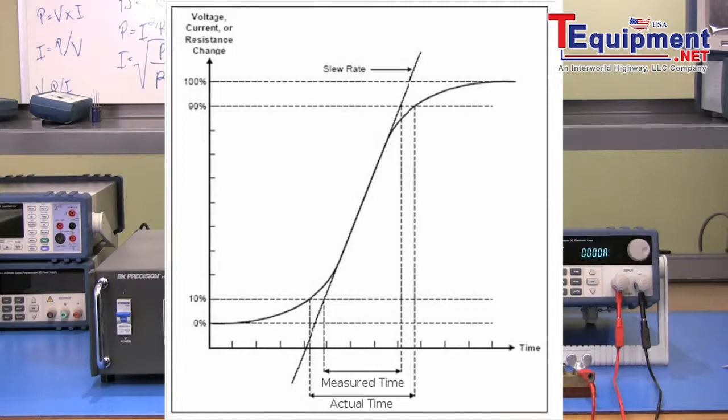Hence, the slew rate calculation is simply the difference in the load change, in this case rated max current minus 0 amp, all over T, where T is the measured time from 10% to 90% region, and rated max current is the specified maximum current of the load under test.